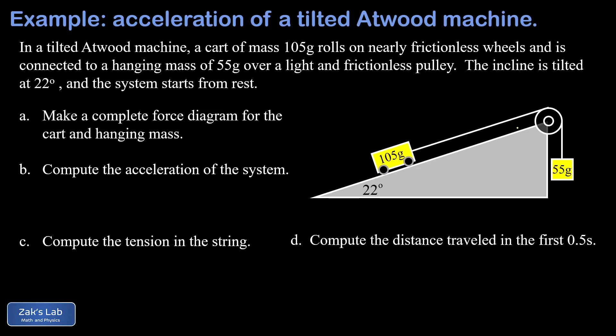This is tied by a string over a light and frictionless pulley to a smaller mass of 55 grams, which also has to be converted to kilograms. We have the usual goals: find the acceleration of the system and the tension in the string, and then we have a follow-up kinematics question where we want to find the distance traveled by this system in the first 0.5 seconds.